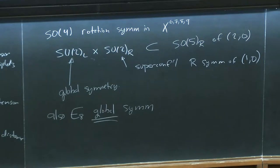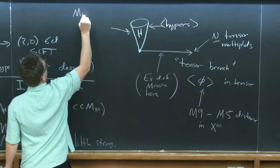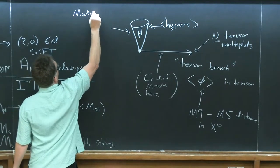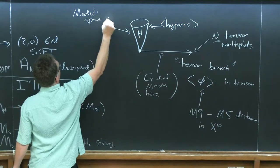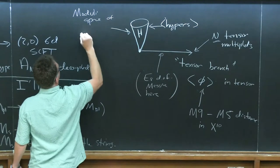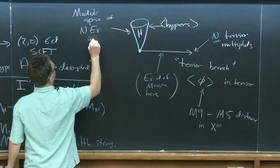Now what's the Higgs branch? In this particular case the Higgs branch is the moduli space of N E8 instantons.